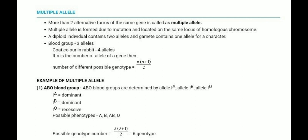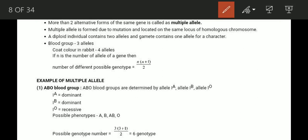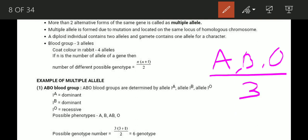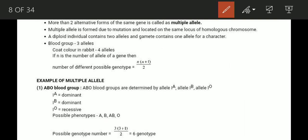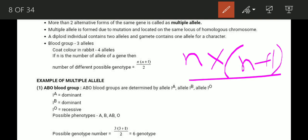Let's look at examples of multiple alleles. Blood group has 3 alleles, and coat coloring in rabbits has 4 alleles. The formula to calculate the number of possible genotypes for multiple alleles is n times (n+1) divided by 2.